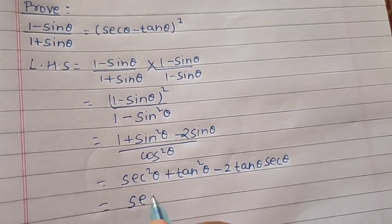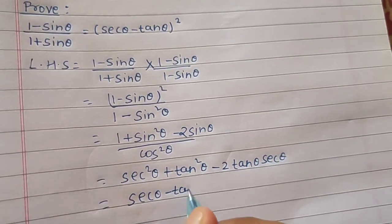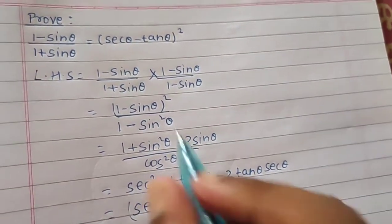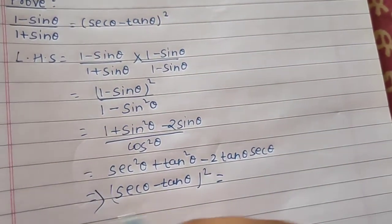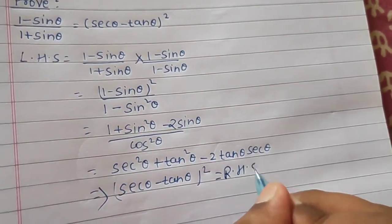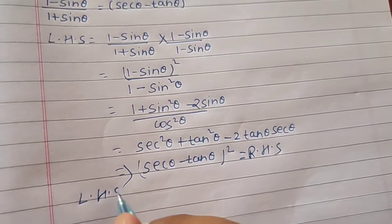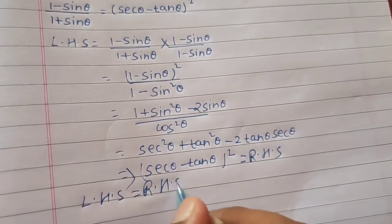This is nothing but secant theta minus tan theta the whole square which is equal to RHS and hence we proved LHS equals to RHS.